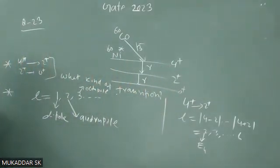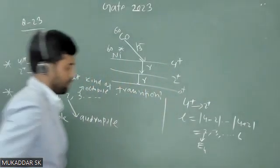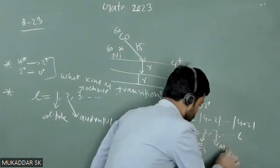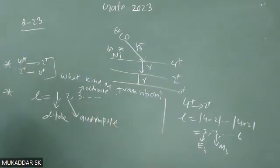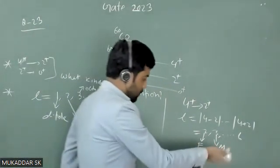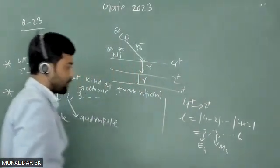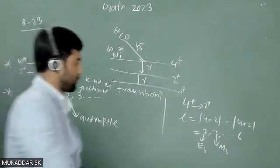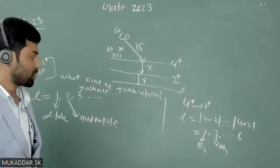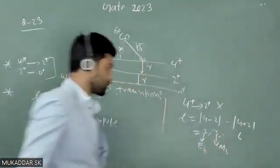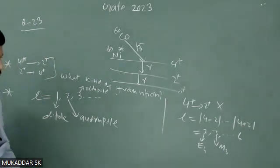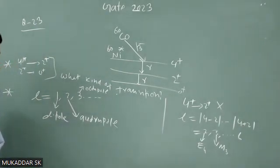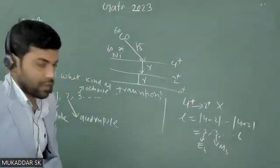For this transition, many possible L values are there, but according to the given options, only one L value is given for this transition. That's why for this transition, many L values are possible, but according to given options we have only one L value, so it is not correct because you have many transitions allowed there.